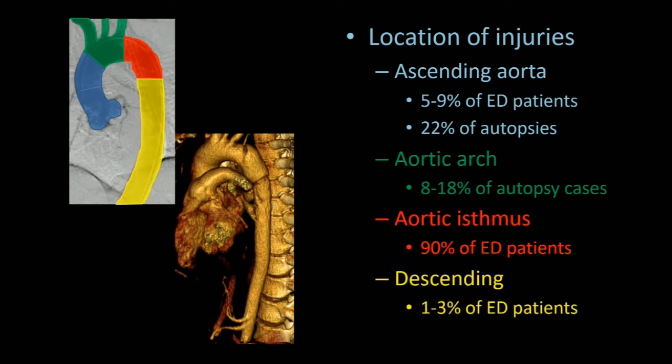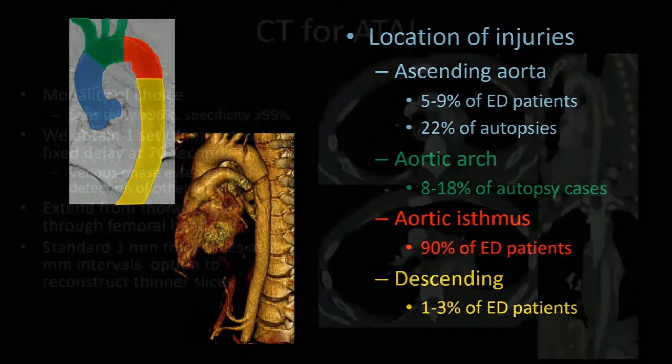Descending aortic injuries, which are quoted as a relatively low number in the literature, only about 1 to 3%, are becoming increasingly recognized. In the era of CT, we're able to pick up small thrombi that are sites of aortic injury. They were probably missed in the angio era, so this is probably a gross underestimate for us as radiologists.